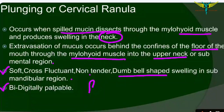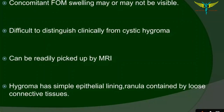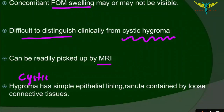In examination, the plunging ranula is bi-digitally palpated, meaning with two fingers. The swelling in the floor of the mouth may or may not be visible. Due to the large neck swelling, it may be difficult to distinguish between cystic hygroma and the plunging ranula. It can be easily diagnosed by MRI. Cystic hygroma has a simple epithelial lining, whereas the ranula contains loose connective tissue — this is the differential diagnosis.